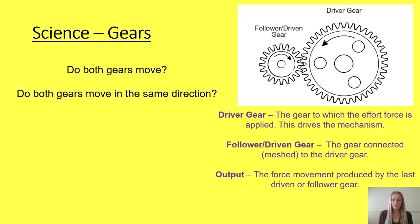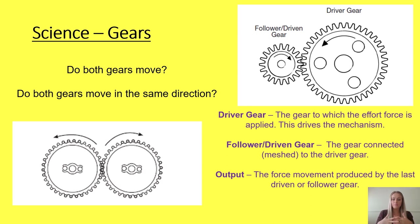On screen we have the driver gear going to the left and the driven gear or follower going to the right. The driver gear is the gear to which the effort force is applied — this gear drives the mechanism. The follower gear is slightly smaller; you can see that they interlock together, they're meshed together, and it is connected to the driver gear. The output is the force movement — this is the outcome of what happens, produced from the last driven or follower gear.